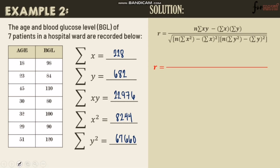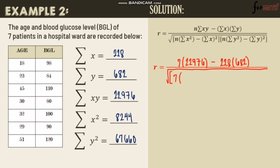Substituting into the formula with N = 7: R = (7×22,976 − 228×682) / √[(7×8,244 − 228²)(7×67,660 − 682²)]. For one-liner calculator: open parentheses, 7 times 22,976 minus 228 times 682, close, divide, square root, two open parentheses, 7 times 8,244 minus 228 squared, close, open, 7 times 67,660 minus 682 squared, two close, equals.